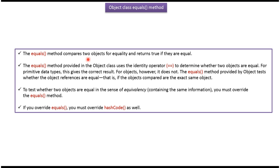The equals method compares two objects for equality and returns true if they are equal. The equals method provided in the Object class uses the identity operator to determine whether two objects are equal. For primitive data types this gives the correct result, but for objects it does not — it tests whether the object references are equal, meaning if the objects compared are the exact same object. If you want to return true when two objects contain the same information, then you must override the equals method.